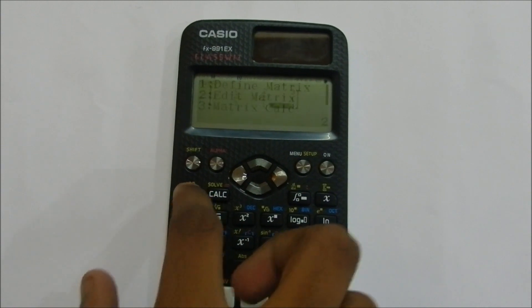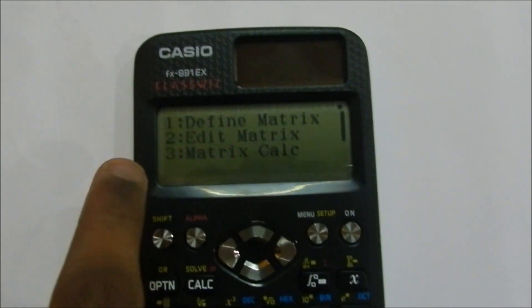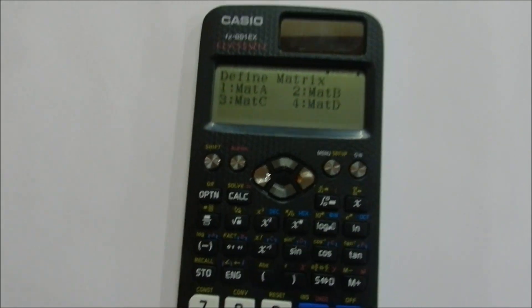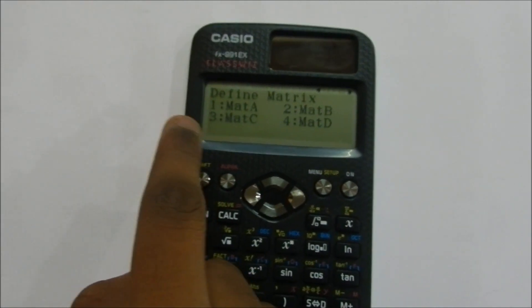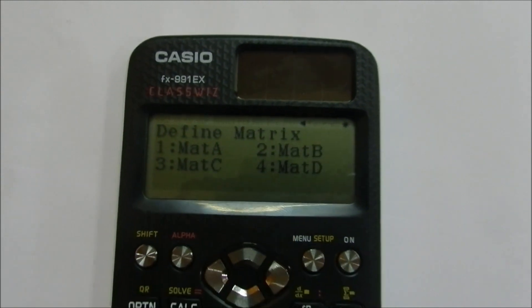Now click Option. Again, select Define Matrix. Option 1 and now take Option 2. As we have already defined Matrix A, now we have to define Matrix B.